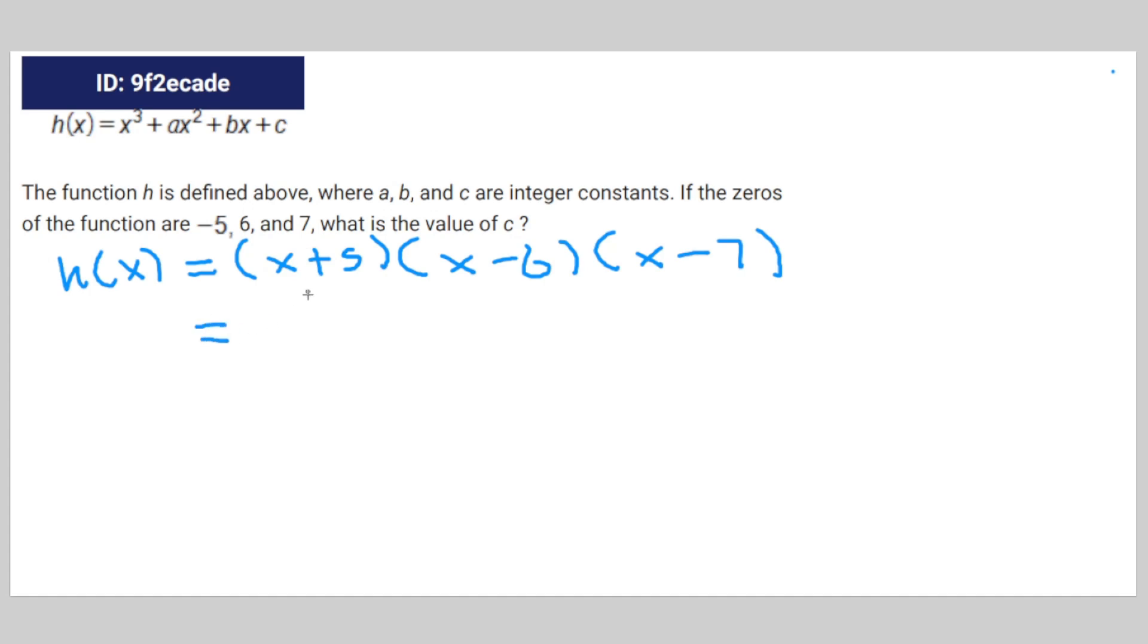And if you expand that, it's going to be x squared minus x minus 30 times x minus 7.